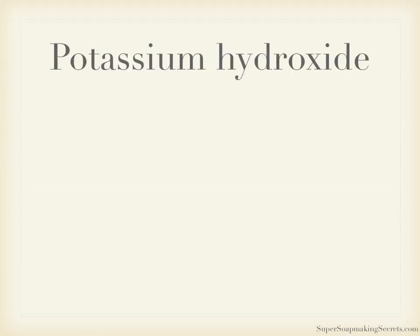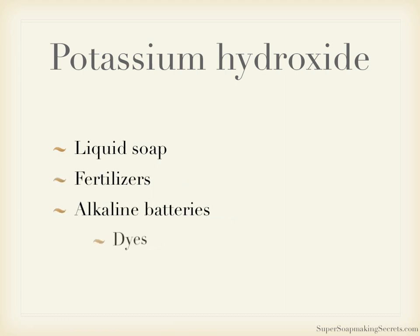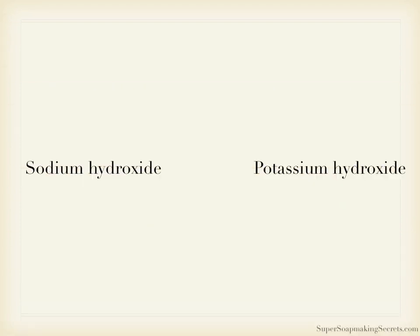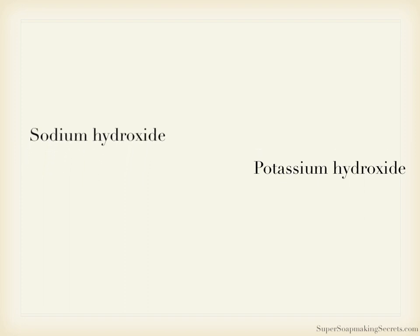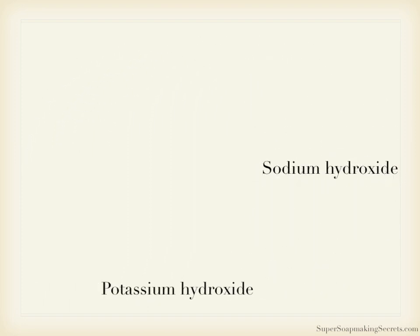Potassium hydroxide, commonly known as caustic potash, is used to make liquid soap. It's mainly used in commercial chemicals such as fertilizers, alkaline batteries, and dyes. It's harder to find than sodium hydroxide, and soaps made of it are softer and can easily dissolve in water than sodium hydroxide soaps. In soap recipes, sodium hydroxide cannot be substituted with potassium hydroxide and vice versa, because soap making has different quantity requirements of these two chemicals depending on the kind of soap being manufactured.